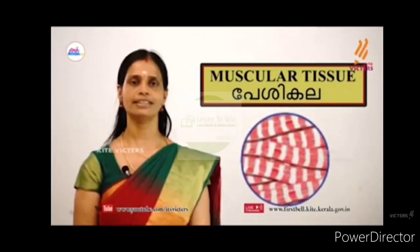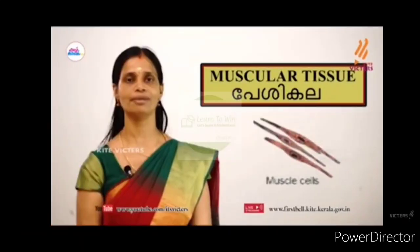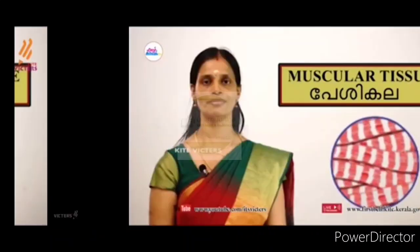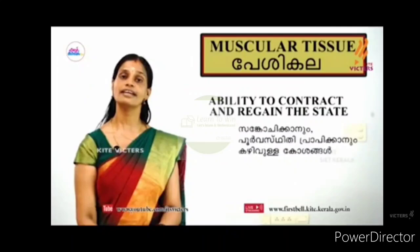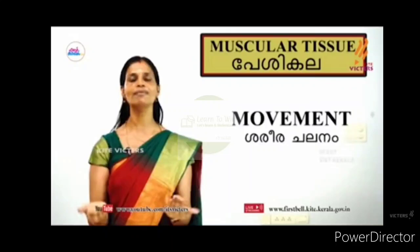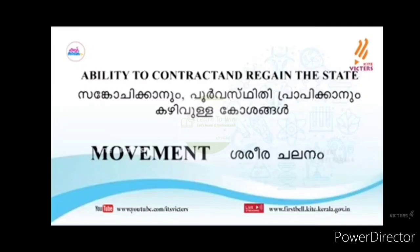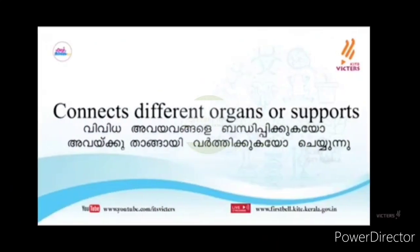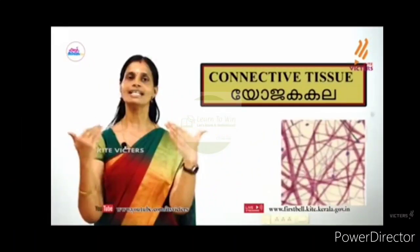Next is muscular tissue. Muscles help movement in the body. After muscular tissue, we have connective tissue. We have many organs in our body, and connective tissue helps connect and support those organs. Connective tissue includes bone, cartilage, blood, and fibrous tissue.